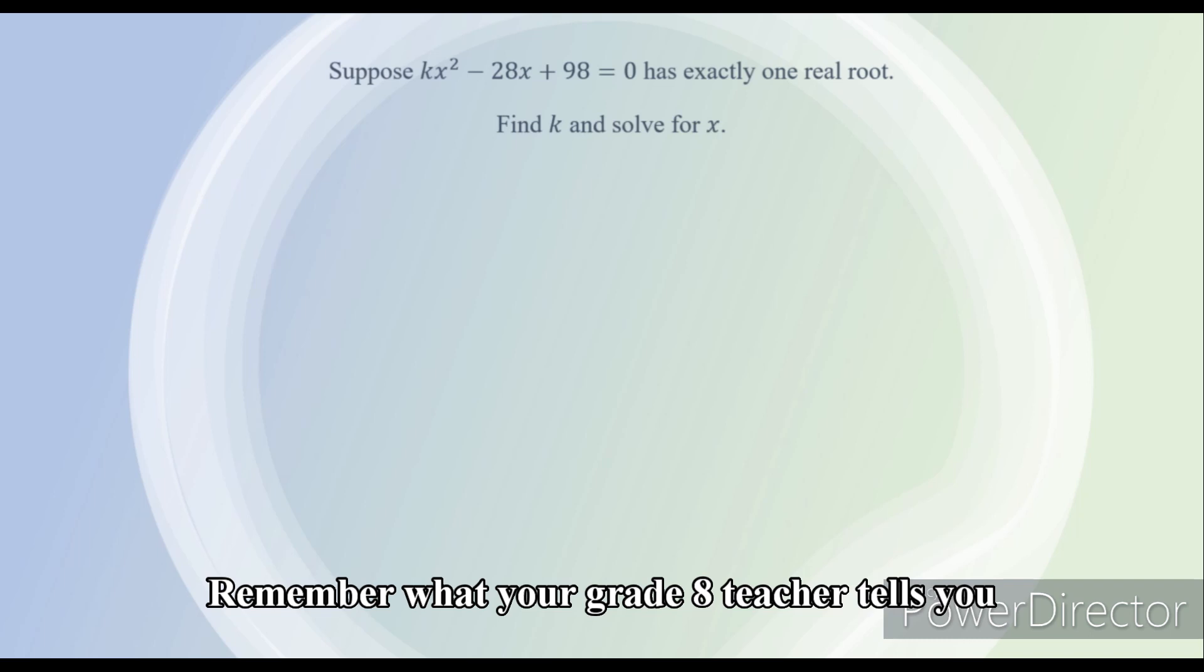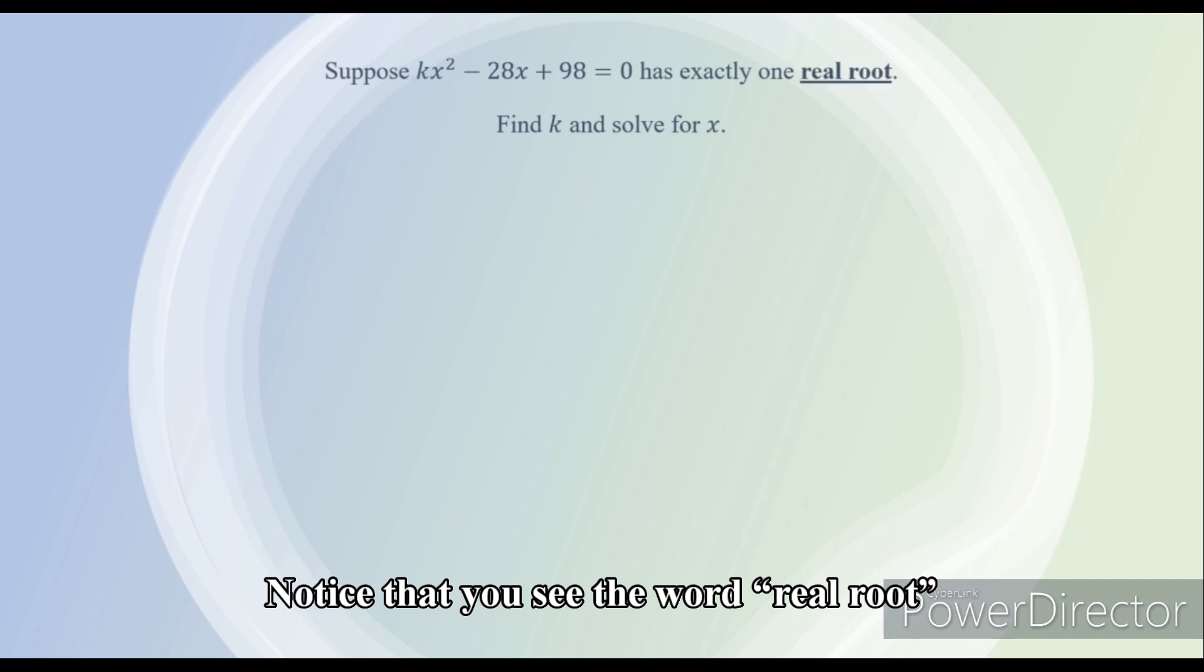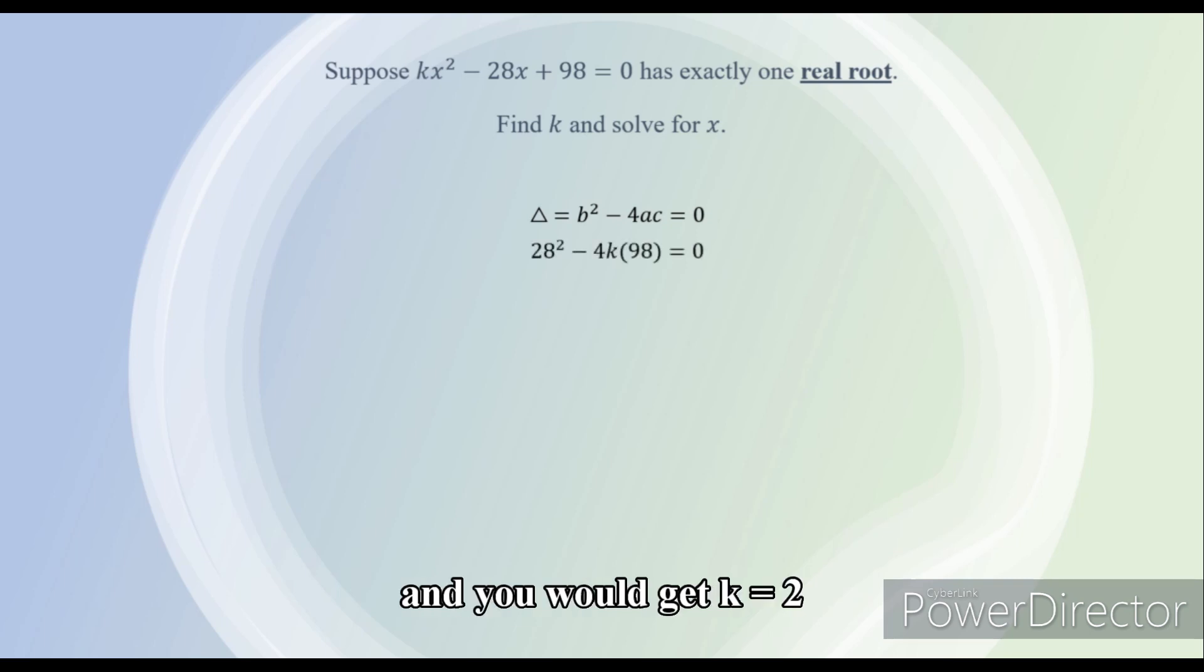Remember what your grade 8 teacher tells you. This is a quadratic equation. Notice that you see the word real root, so you try to compute the discriminant. b squared minus 4ac equals to zero. So plug in the variables and you will get k equals to 2.